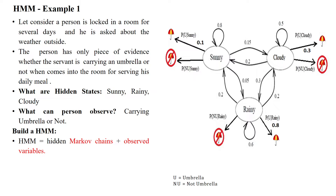Welcome to this session explaining the Hidden Markov Model with an example. A person is locked inside a dark room — all windows and doors are closed — so he does not know what is happening outside. He receives food through a servant. The only clue he has is whether the servant is carrying an umbrella when entering the room to serve food. If the servant carries an umbrella, the person infers it may be rainy outside; if not, it may be sunny.